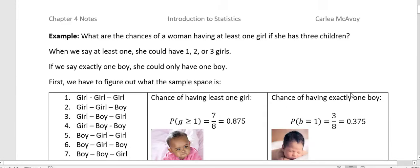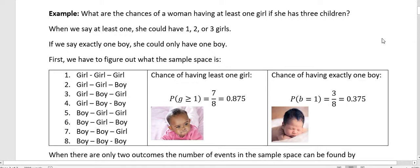Okay. Now I want to talk about another thing that we frequently talk about when we're talking about statistics. And it's things like this one: what are the chances of a woman having at least one girl if she has three children? So when we say at least one girl, we mean she could have one or two or three.